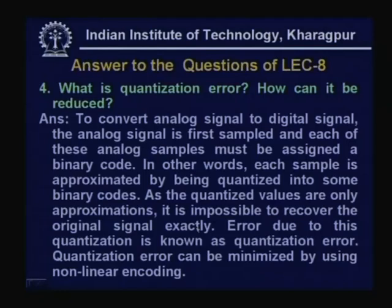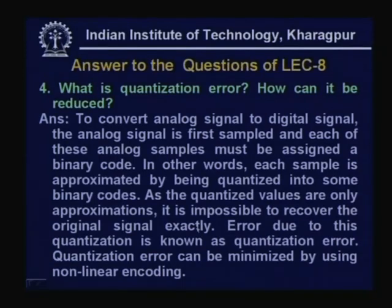Fourth question: What is quantization error and how can it be reduced? To convert an analog signal to digital, the analog signal is first sampled and each sample is approximated by being quantized into a binary code. Since the quantized values are only approximations, it is impossible to recover the original signal exactly — this leads to quantization error. Quantization error can be minimized by using non-linear encoding.